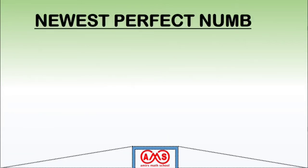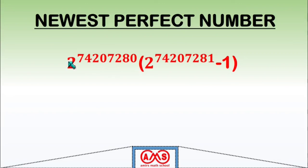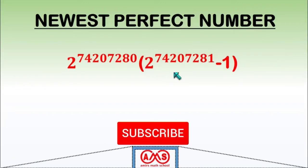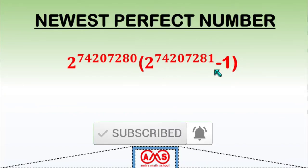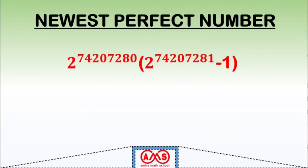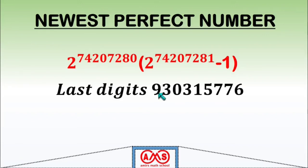Now let's see the newest perfect number. In January 2016, mathematicians found the perfect number 2^74,207,280 × (2^74,207,281 − 1). If 2^74,207,281 − 1 is a Mersenne prime, then multiplying it with 2^74,207,280 gives a perfect number. The last digits of this perfect number are ...93,031,576, and according to the end digit theorem, it also ends with 6, confirming it is an even perfect number. This perfect number consists of 44,677,235 digits.